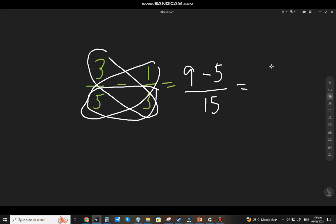And there you have it. 9 minus 5 is 4. Copy mo lang yung 15. So 3 fifths minus mo ng 1 third, that will be 4 over 15.